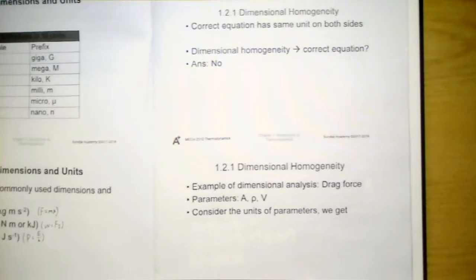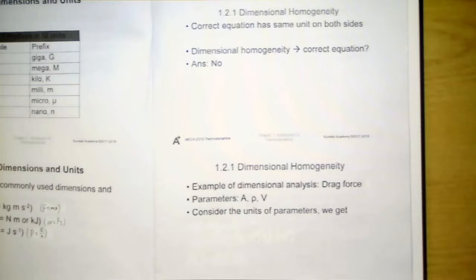There is a next subsection here that is called dimensional homogeneity. An engineer needs to ensure that the equation is dimensionally homogeneous, or we call that dimensionally correct. That means two sides of the equation need to have the same unit. But of course, dimensional homogeneity does not necessarily imply that the equation is correct, as it may differ by a multiplicative constant. However, once the units in both sides do not match, the equation must be wrong. Therefore, it is a good practice to check the accuracy of the derived equation by checking the units on both sides.